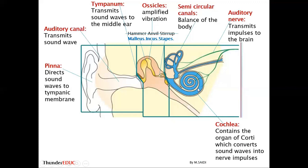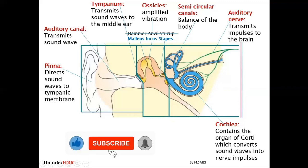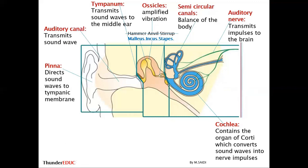The cochlea is the coiled part of the inner ear. When discussing hearing we uncoil it conceptually. It contains the organ of Corti, which converts sound waves into nerve impulses. The organ of Corti has sensory cells that detect changes in pressure, are stimulated depending on how much pressure is applied, and convert that pressure into an impulse that is sent to the brain for interpretation.